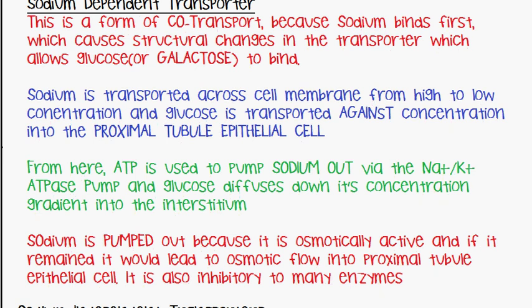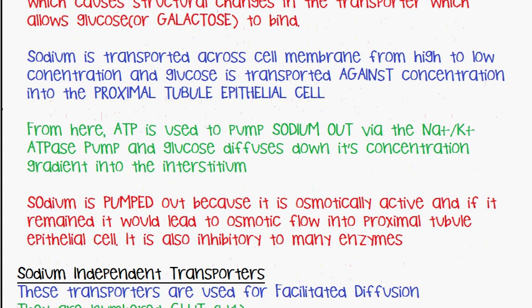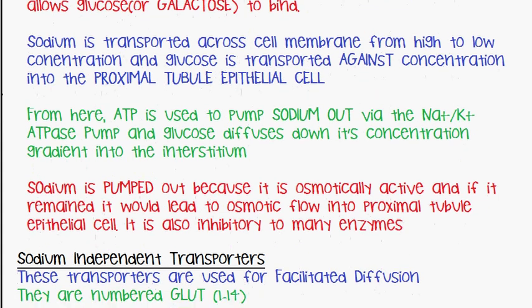If sodium stays in the proximal tubule epithelial cell, it will cause osmotic flow into the cell. It also inhibits many enzymes, which is why sodium is pumped out. At the same time, glucose passes out via facilitated diffusion into the interstitium.